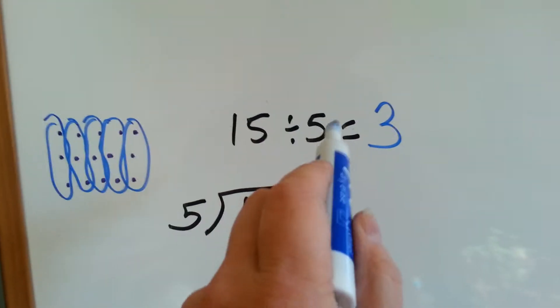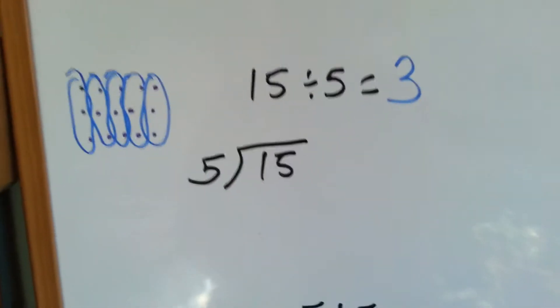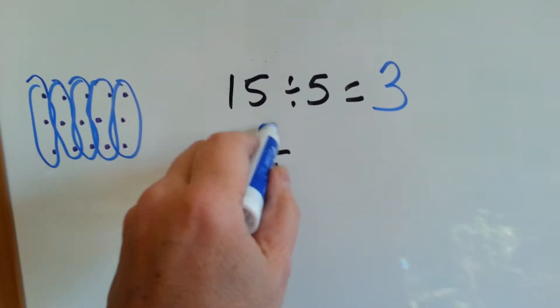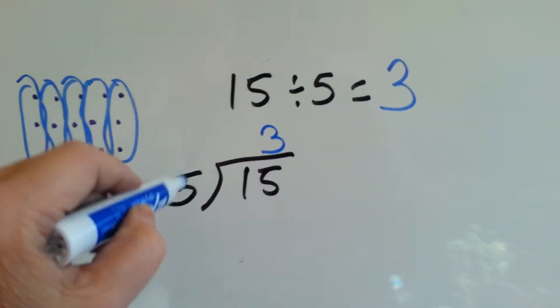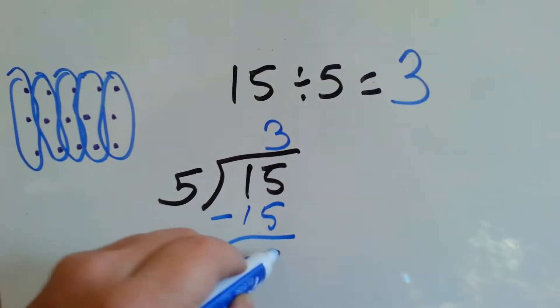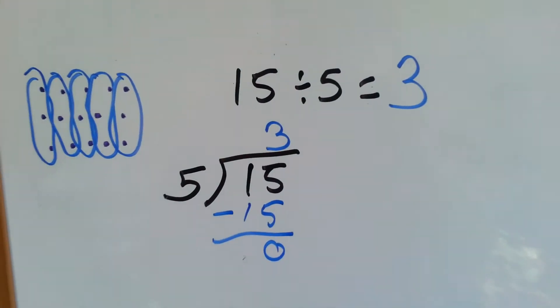Also, 3 times 5 is 15. That's the inverse operation. So 5 goes into 15 three times. 5 times 3 is 15. We do our subtraction and get 0.